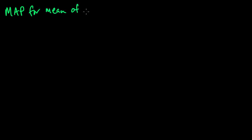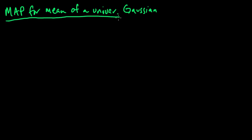Let's compute the MAP, the maximum a posteriori estimate, for the mean of a univariate Gaussian. In another video we computed the MLE for the mean of a univariate Gaussian, and now we'll do the MAP.